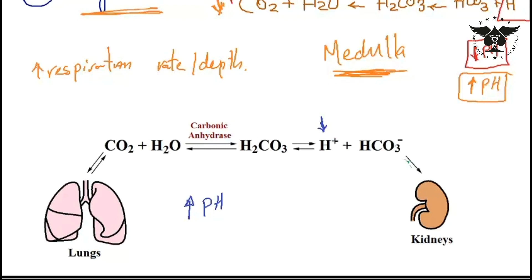One way to do that is by decreasing reabsorption of HCO3 and letting it get excreted in the urine. Therefore by losing HCO3 the equation would be pushed to the right side.